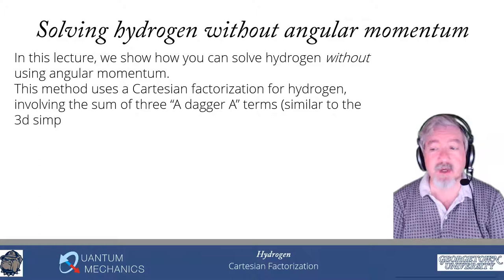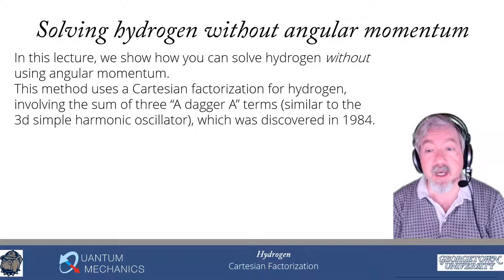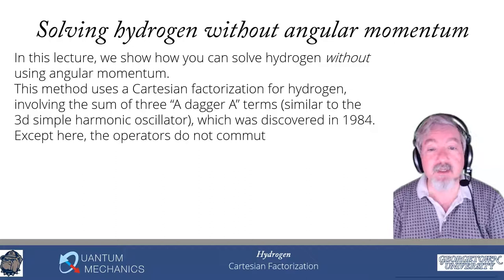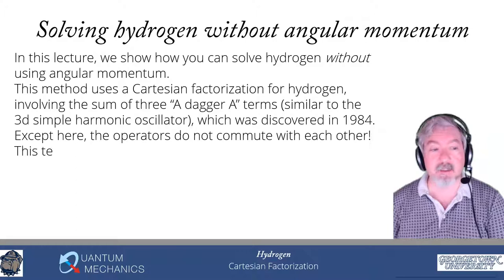In this case, what we have is the sum of three a-dagger-a terms, one for each spatial direction x, y, and z. That's similar to the simple harmonic oscillator, where we also have the sum of three a-dagger-a operators. But the big difference here is that these operators do not commute with each other. Because of that, all of those operators are coupled to each other, and the whole procedure gets quite a bit more complicated to figure out how to solve.